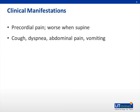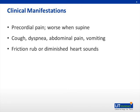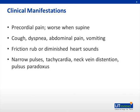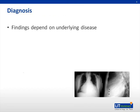Physical exam findings will depend on the degree of fluid accumulation. A friction rub may be noticed when the effusion is small, or muffled heart sounds when the effusion becomes larger. Tachycardia, neck vein distension, and pulsus paradoxus — an exaggeration of the decrease in systolic blood pressure with inspiration due to increased pulmonary venous return to the left side of the heart — also suggest significant accumulation. A pulsus paradoxus greater than 20 mmHg may be an indicator of tamponade. Specific findings will depend on the underlying mechanism of disease.